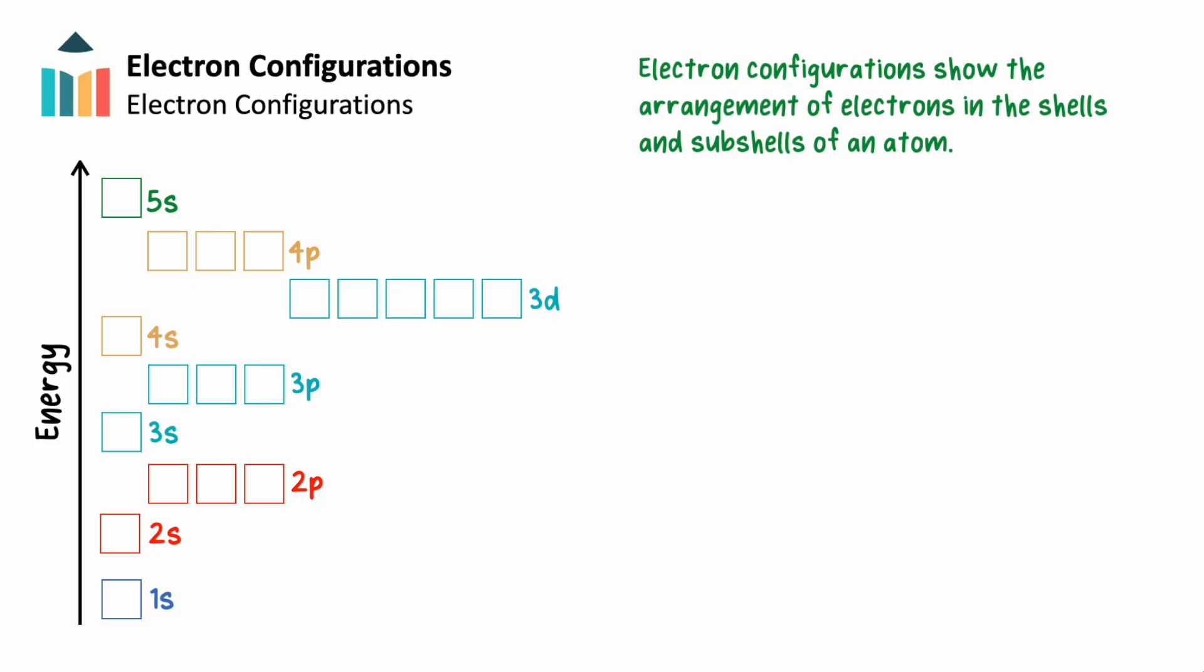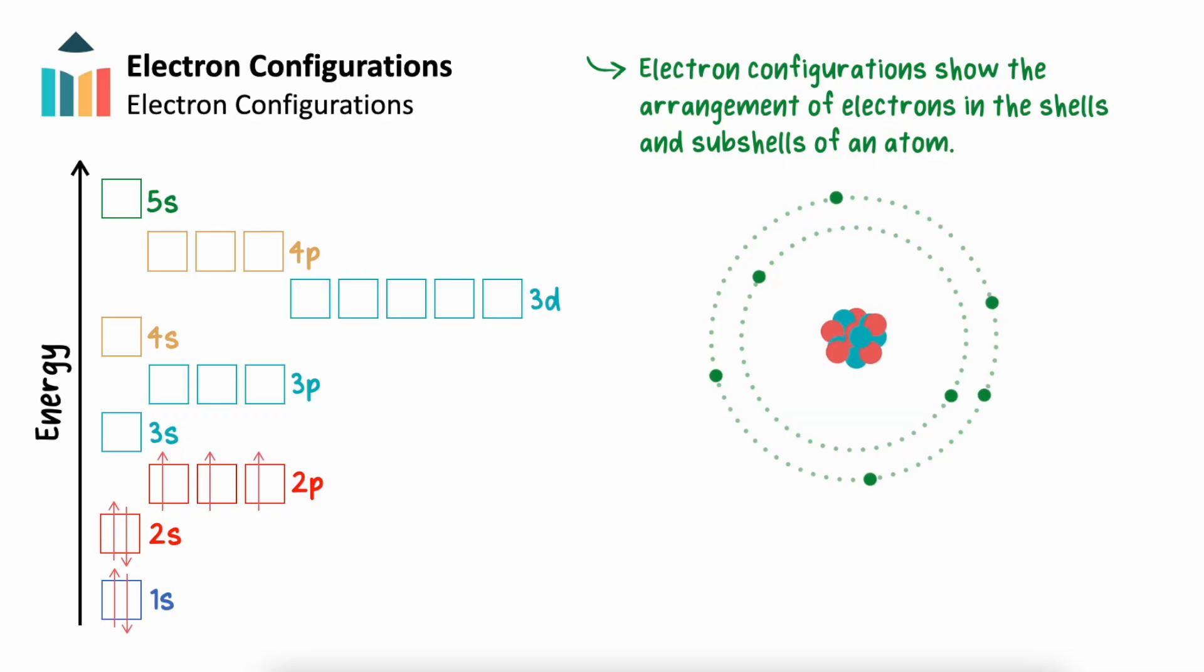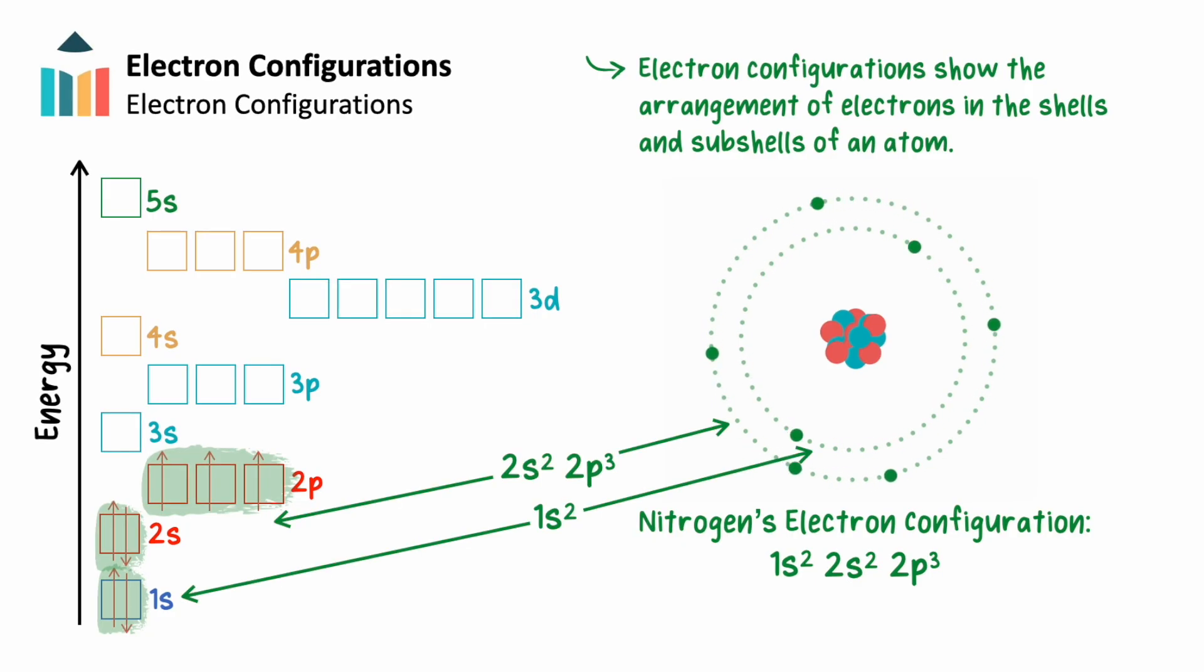The arrangement of electrons in an atom is called its electron configuration. This will show electron shells and subshells in order of increasing number and energy, with a superscript indicating the number of occupying electrons in each subshell. For example, a nitrogen atom with 7 electrons has an electron configuration of 1s2, 2s2, 2p3. We can see this in reference to the electron orbital diagram and the atom's Bohr model.